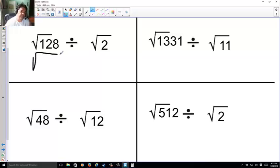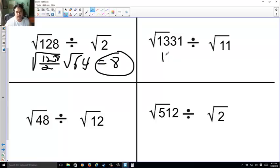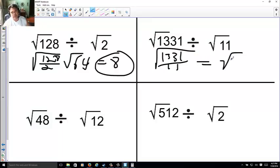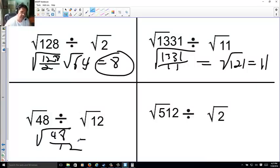Let's see how you did. Root of 128 over 2 makes root of 64. Root of 64 is 8. 1,331 over 11. Rooted, tougher one. Equals root of, this makes 121. And the root of 121 is 11. Here, stack these up. 48 over 12. That makes 4. So, root of 4 is 2.